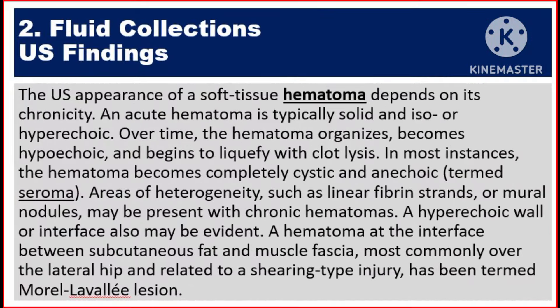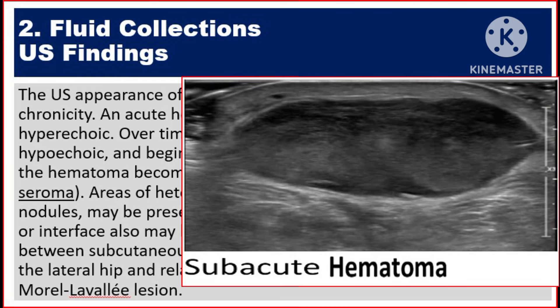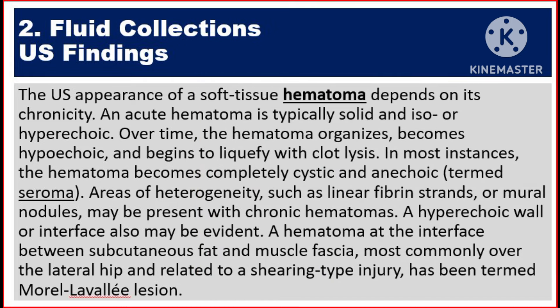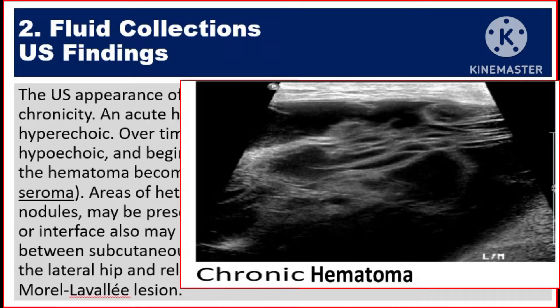The ultrasound appearance of a soft tissue hematoma depends on its chronicity. An acute hematoma is typically solid and iso- or hyper-echoic. Over time, the hematoma organizes, becomes hypo-echoic, and begins to liquefy with clot lysis. In most instances, the hematoma becomes completely cystic and anechoic, termed seroma. Areas of heterogeneity, such as linear fibrin strands or mural nodules, may be present with chronic hematomas.